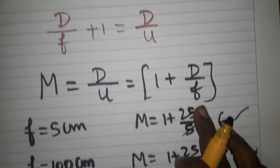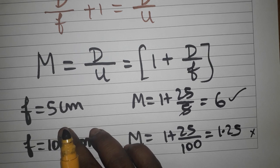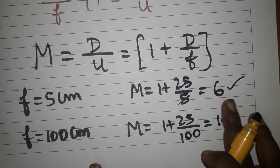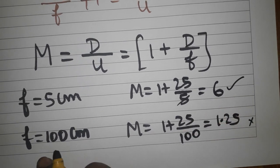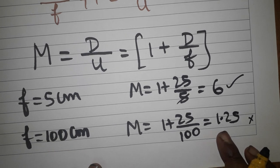Finally, we will get the magnification like that. Example: focal length is 5 centimeters. Now what is the magnification? 6 times magnification. Image focal length is 100 centimeters. Now what is the magnification? Magnification is equal to 1.25.